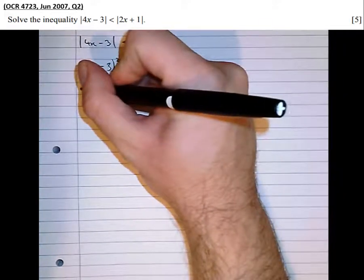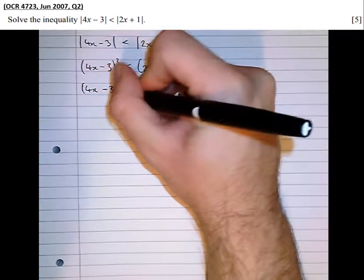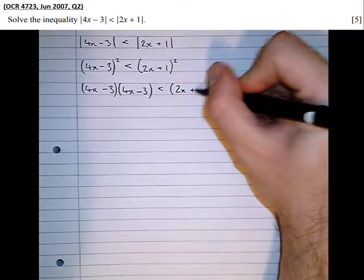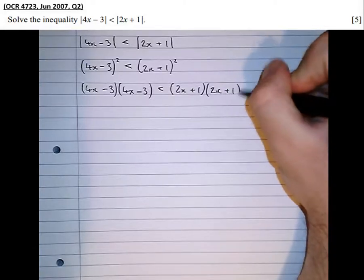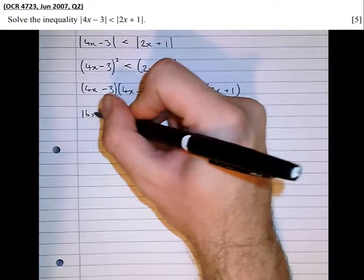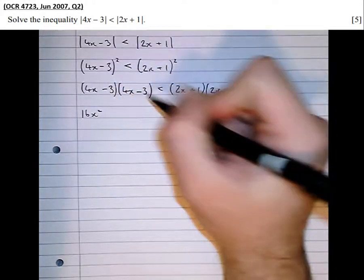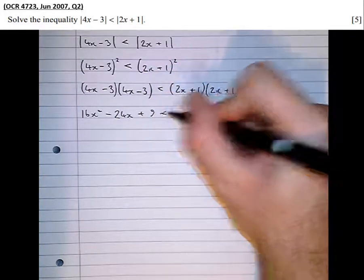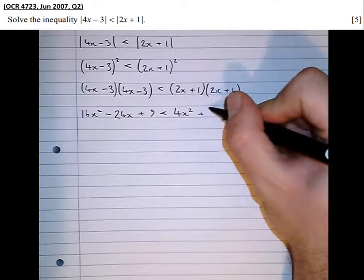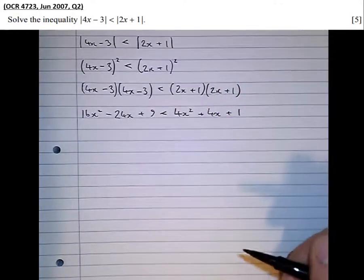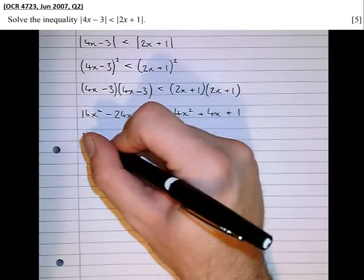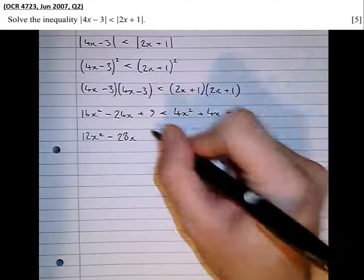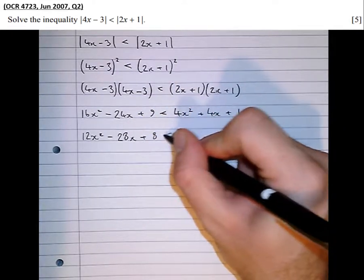OK, so now expanding the brackets. We've got (4x minus 3)(4x minus 3) is less than (2x plus 1)(2x plus 1). So that's 16x squared minus 24x plus 9 is less than 4x squared plus 4x plus 1. Taking everything over to the other side, we've got 12x squared minus 28x plus 8 is less than 0.